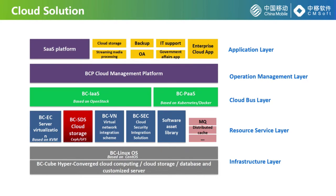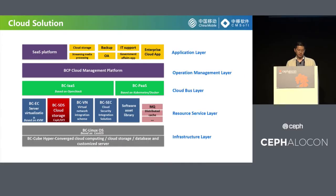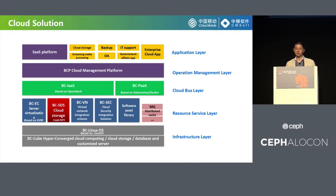The BC SDS Cloud Storage is a storage solution of Big Cloud. It provides block storage and object storage based on Ceph, and file storage is based on GlusterFS.